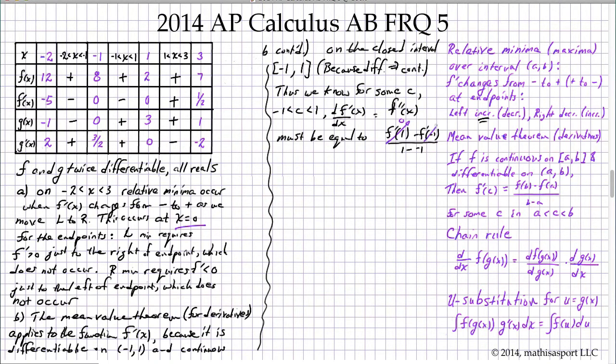f prime at negative 1 is 0. And so that's, to restate, let's just put it all together. There is a c such that f double prime of c equals 0.